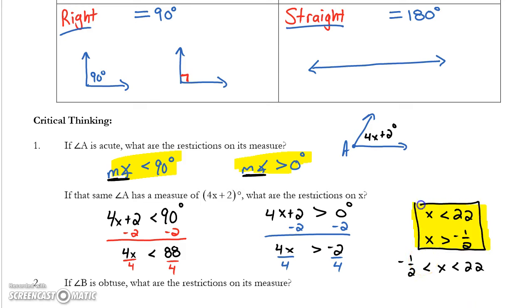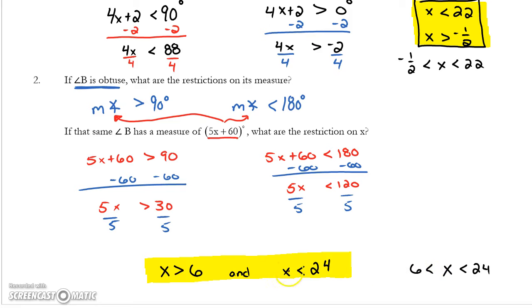If I tell you that that angle has this measure of 5x plus 60, I will put that in for the measure of my angle. 5x plus 60 is greater than 90, 5x plus 60 is less than 180. Go ahead and press pause, try to solve those inequalities to give me my final restrictions on x. So, we should find that the values of x that represent the restrictions are x is greater than 6 and x is less than 24.